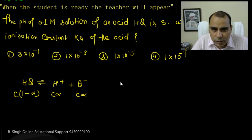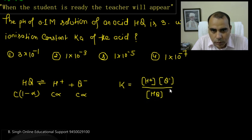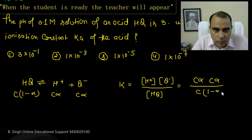The dissociation constant Ka is equal to H+ concentration times Q- concentration upon HQ concentration. This will be c alpha times c alpha upon c(1 minus alpha).